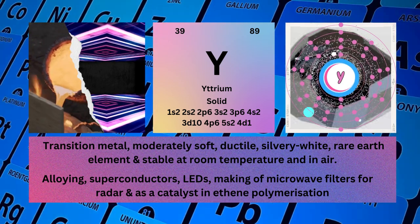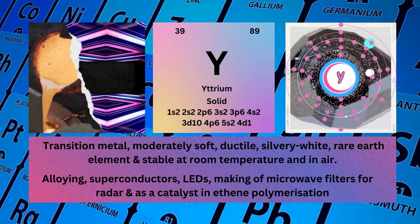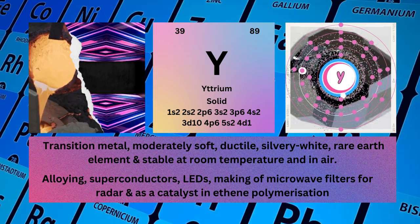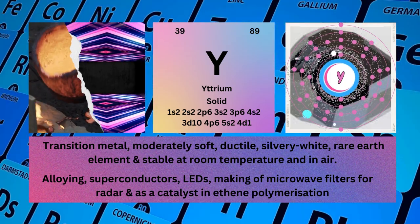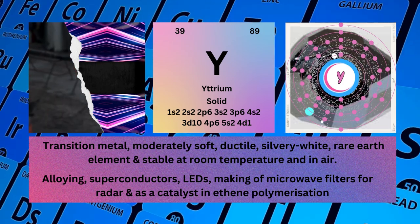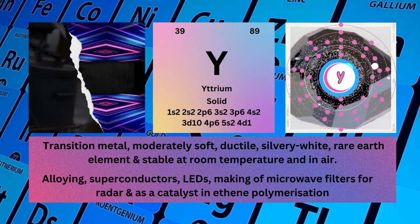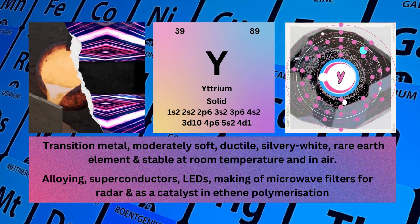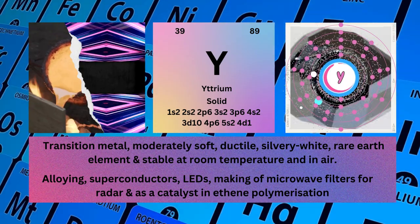Physical properties: transition metal, moderately soft, ductile, silvery white, rare earth element, and stable at room temperature and in air. Yttrium is used as an alloying agent, in superconductors, LEDs, making of microwave filters for radar, and as a catalyst in ethylene polymerization.